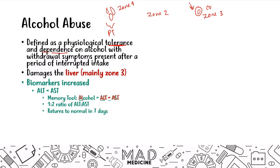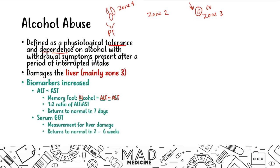After a week of drinking alcohol, you may not be able to diagnose liver toxicity simply based on ALT and AST. What you need to measure then is serum GGT, or gamma-glutamyl transferase — a measurement for liver damage. This returns to normal in two to six weeks. So if someone chronically abusing alcohol gets tested for serum GGT, their levels remain elevated longer than ALT and AST, giving a good indication of liver damage at zone three.